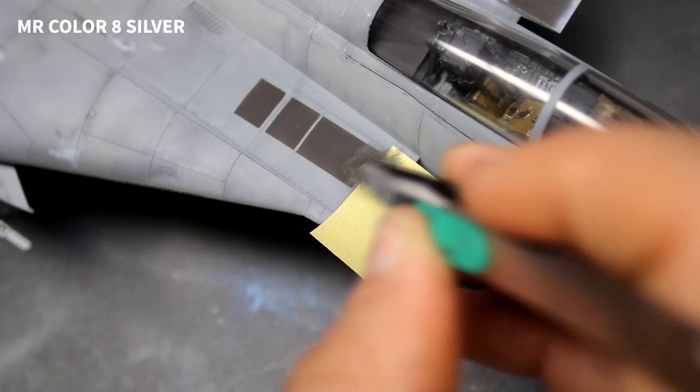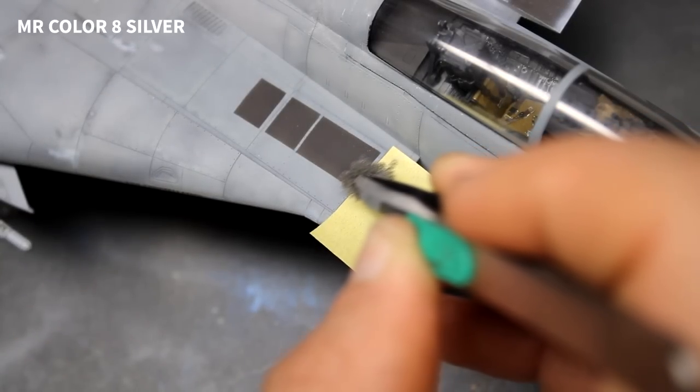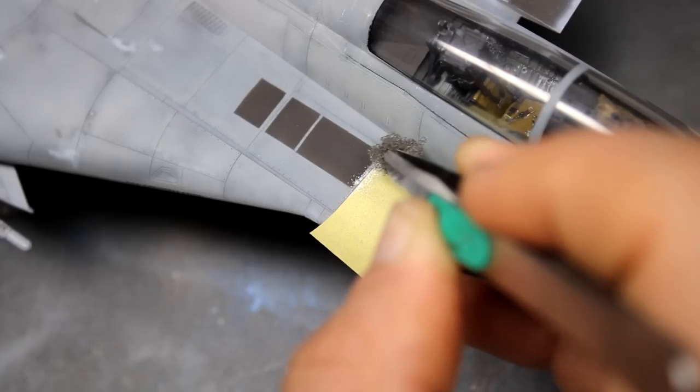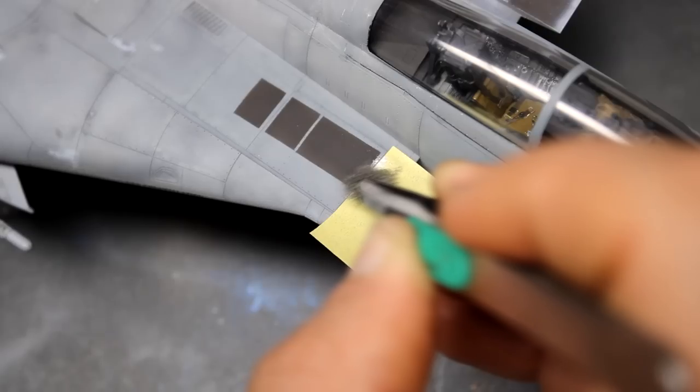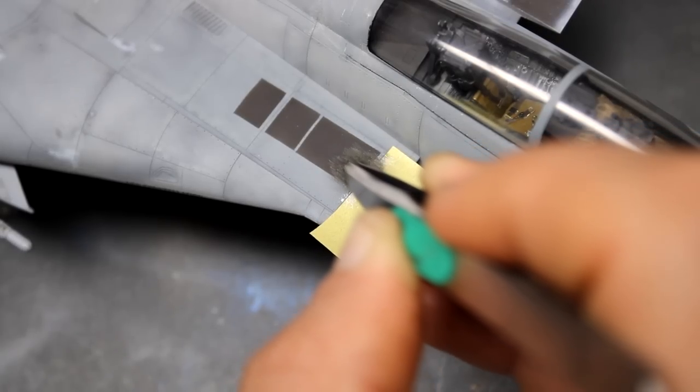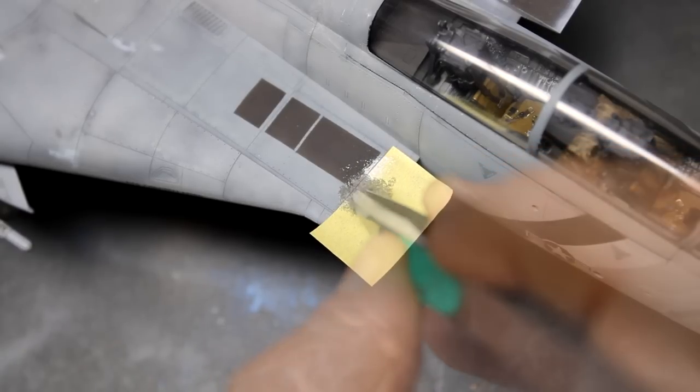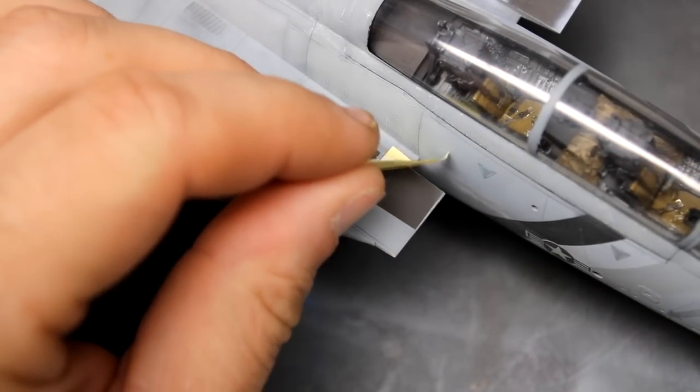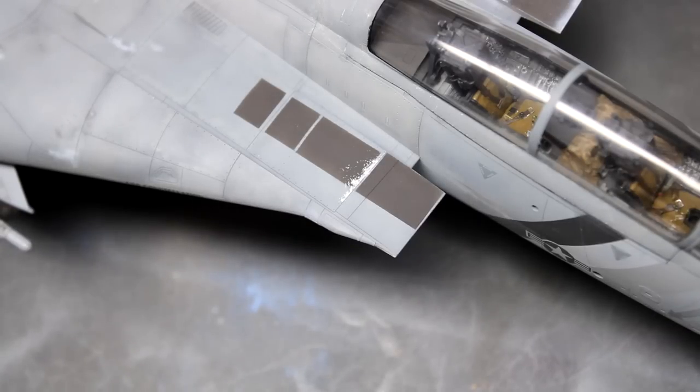To take the weathering one step further, I found a lot of Tomcat reference photos that showed chipping down to the aluminum underneath, and in order to do that, I just used some more sponge chipping using Mr. Color Silver 8. The nice thing about that paint is it's very shiny, and even after adding some oils and washes on top, it'll still hold its sheen, making it pop from the flat paints around it.